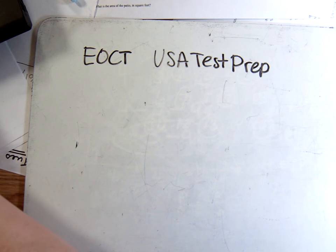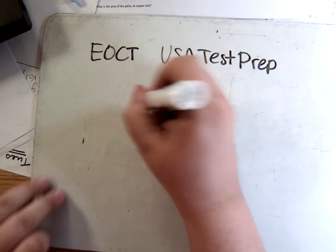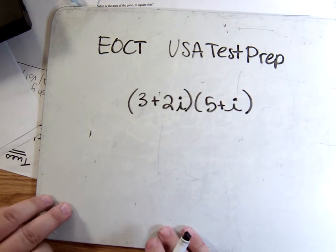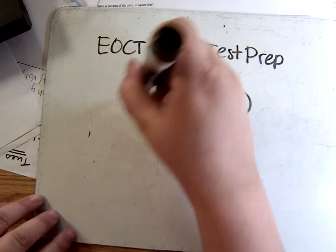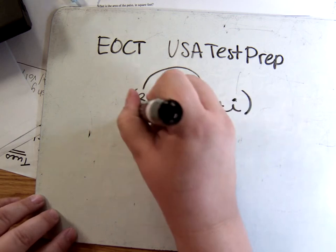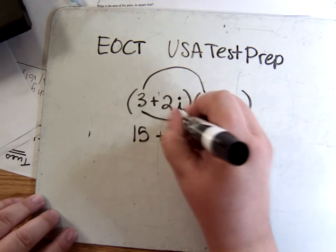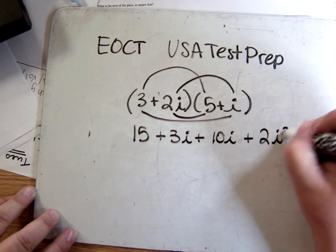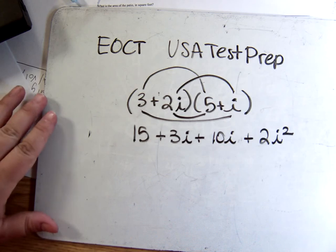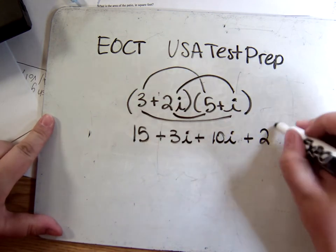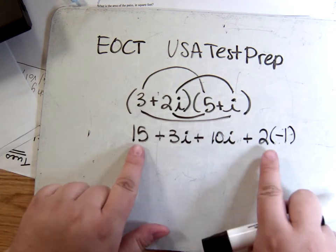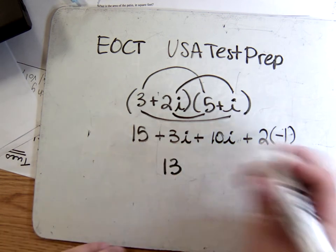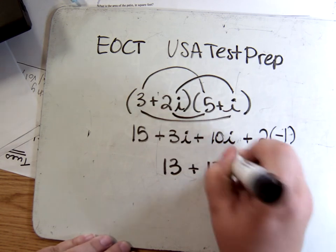The next problem asks: which is equivalent to (3 + 2i)(5 + i)? Remember, if you don't have anything between the parentheses, this means you're doing FOIL. So: 3 times 5 gives 15, 3 times i gives 3i, 2i times 5 gives 10i, and 2i times i gives 2i squared. Every single time you see i squared, change it automatically to negative 1. So erase i squared and put negative 1 in its place. Now combining like terms: 15 plus negative 2 is 13, and 3i plus 10i is 13i. The answer is 13 + 13i.